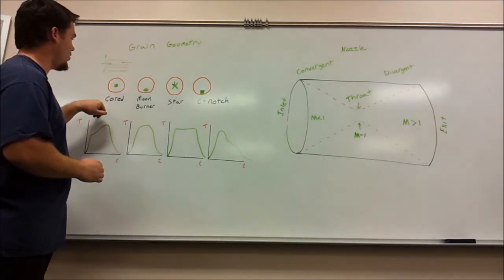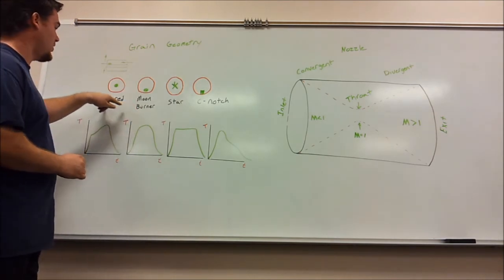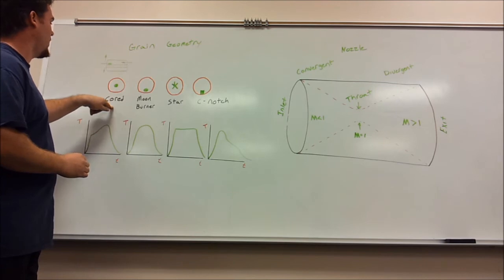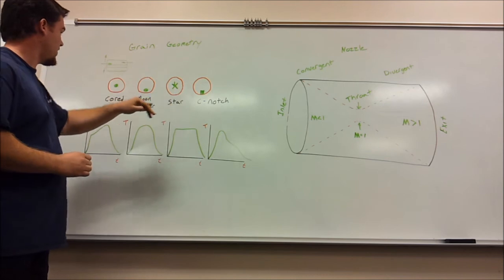Here's the cord motor and the moon burn motor. These are the ones more likely to be able to use. They're easier to manufacture and they are cheaper to manufacture. The inside of these and the C-notch has to be perfect.